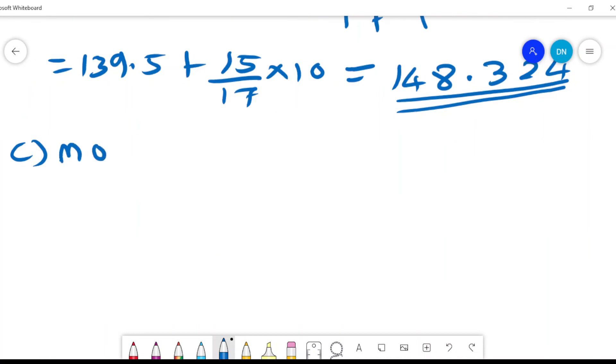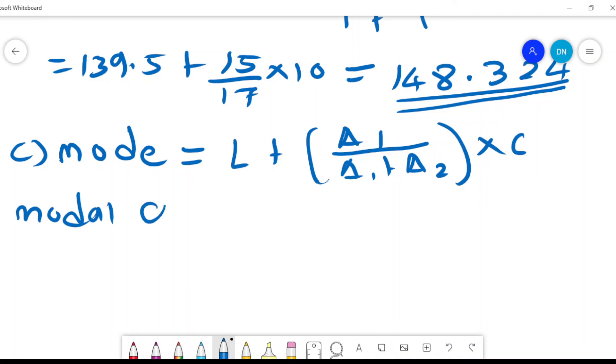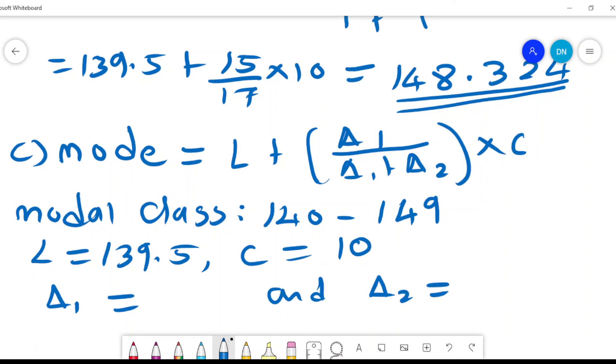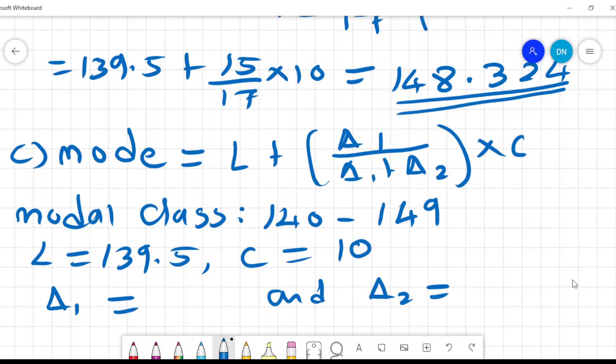The last is the mode, which is given by the formula L plus delta 1 over delta 1 plus delta 2 times C. Now, the first thing is we need to get the modal class. Now, when you look at the data, which one is the modal class? The modal class is the class with the highest frequency. And so our modal class is 140 to 149. So our L automatically then, it's similar to the one we had. It is 139.5. And our C will also be equals to 10. So what we need to find out is what is delta 1 and what is delta 2.